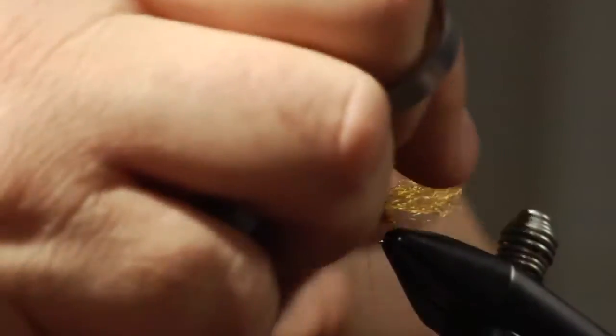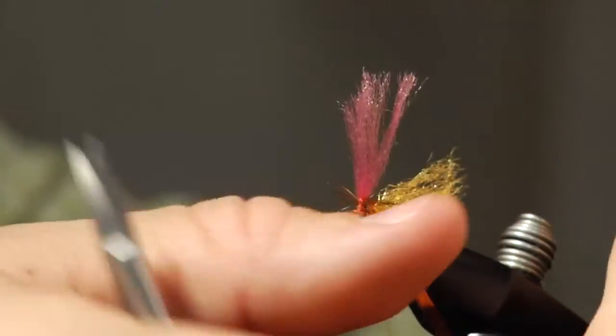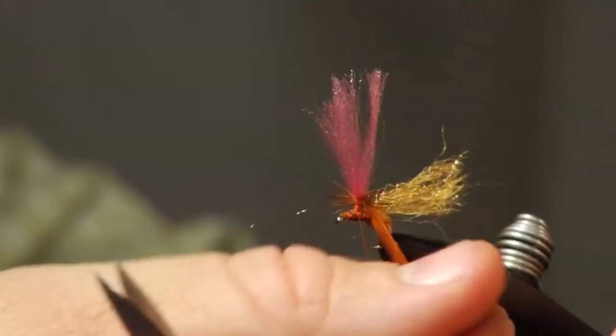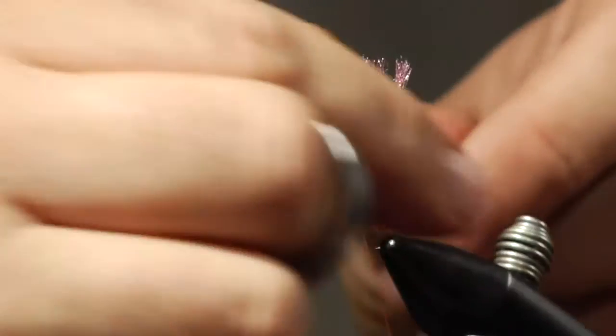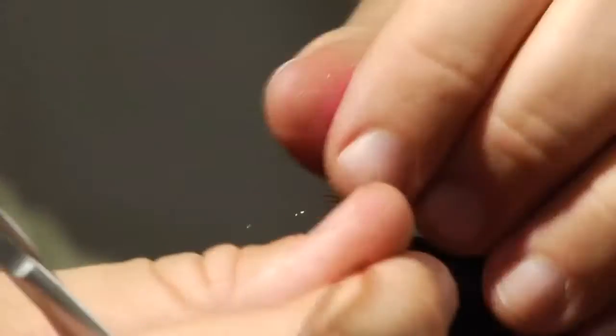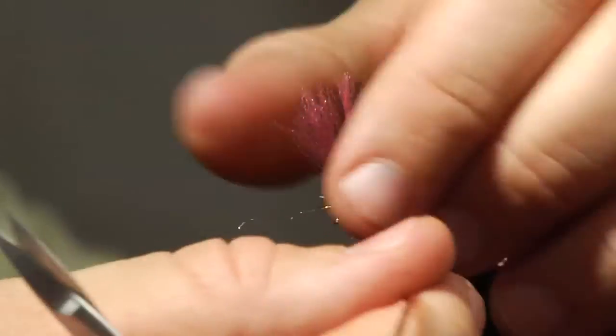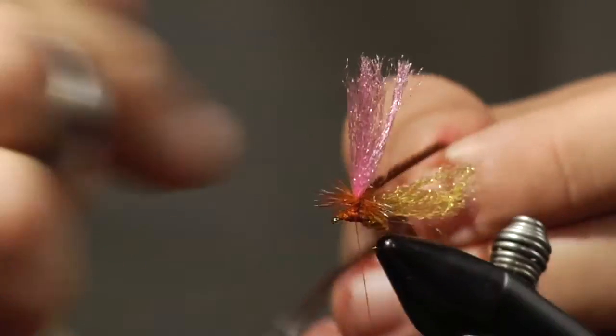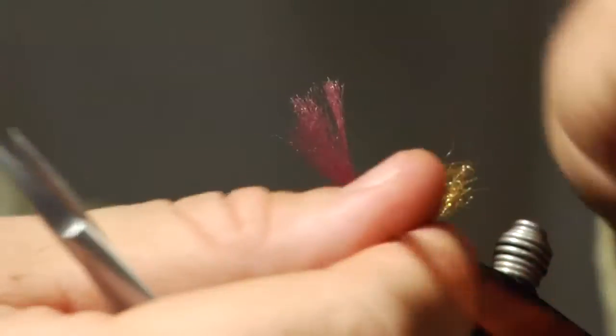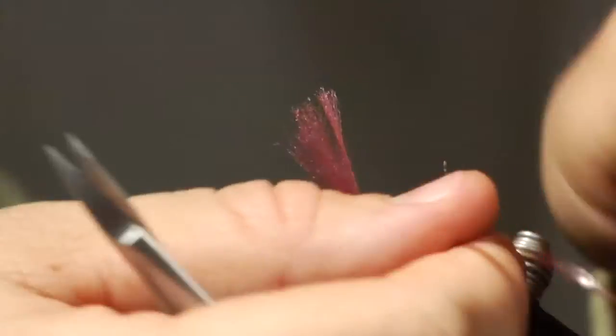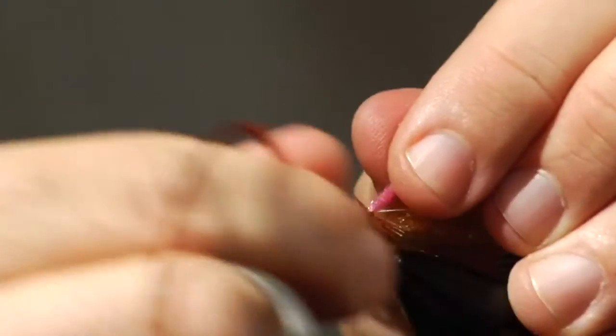I'm going to start to wrap my hackle. I'm going to put as many wraps on there as I can get. This fly's kind of, I definitely take it for an ant, but I also fish it like an attractor so I want it to float really well.